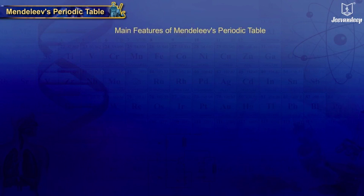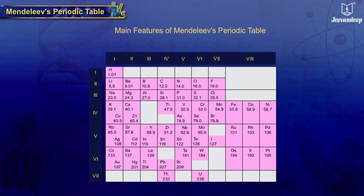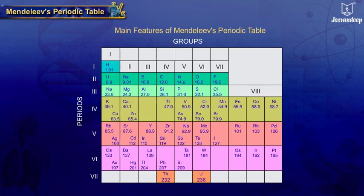Main Features of Mendeleev's Periodic Table: Mendeleev's Periodic Table contains 7 horizontal rows and 8 vertical columns. The horizontal rows in the periodic table are called periods and vertical columns are called groups. There are 8 groups numbered from 1 to 8.